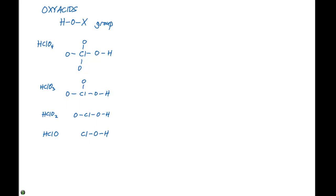So now let's focus our attention on oxyacids which contain an OH bond with an X group on it. And I've listed four of them here: HClO4, HClO3, HClO2, and HClO.